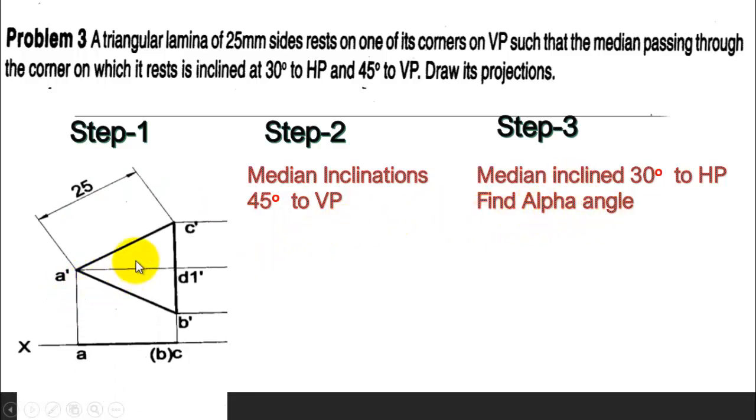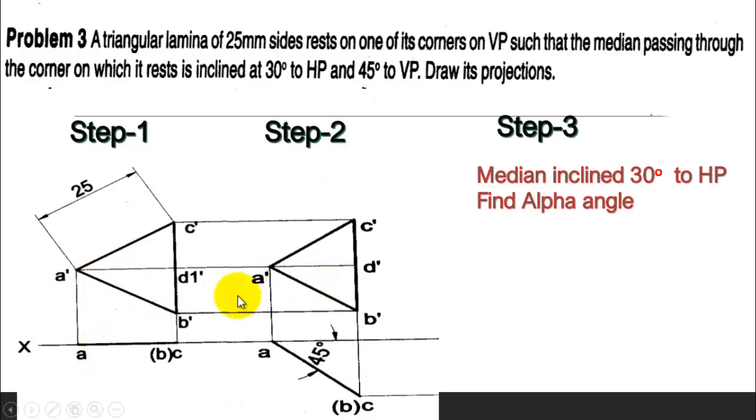Coming to the solution, first we take it in VP and the corner, and we found the front view and top view. Second step, as the median A dash and D1 dash is coming along this line, we can make the surface 45 degrees here, and automatically the median also becomes inclined 45 degrees.